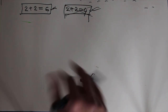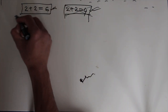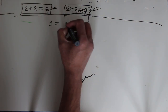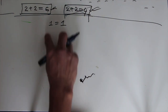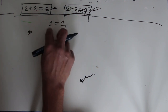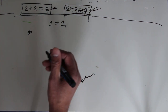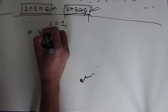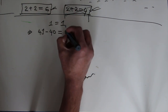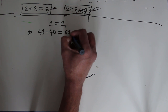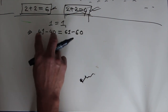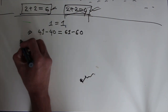So stick with me until the end and try to find where I did the intentional mistake. Let's start to prove 2 plus 2 equals 6. Let's consider 1 equals 1. We know 1 equals 1, and I can expand this as: 41 minus 40 equals 61 minus 60. This is after the expansion — 1 equals 1.